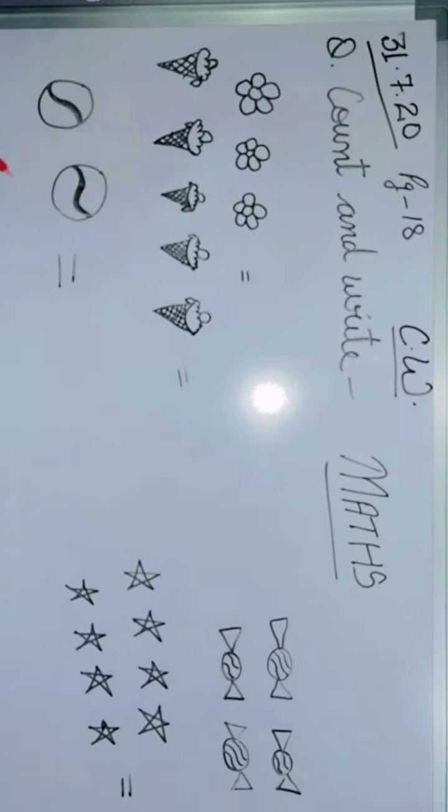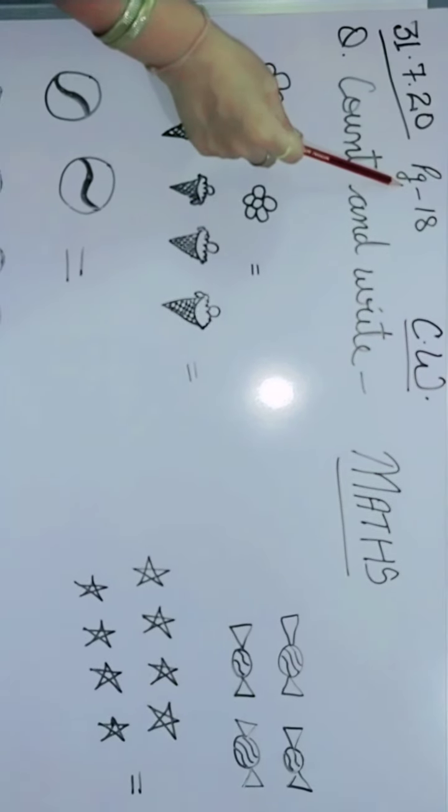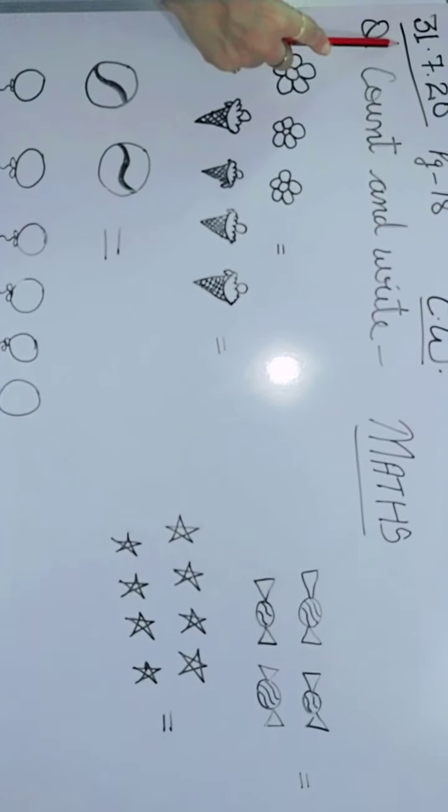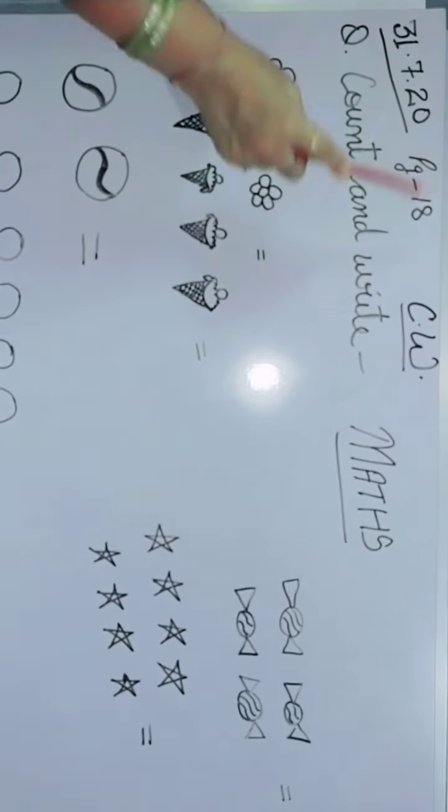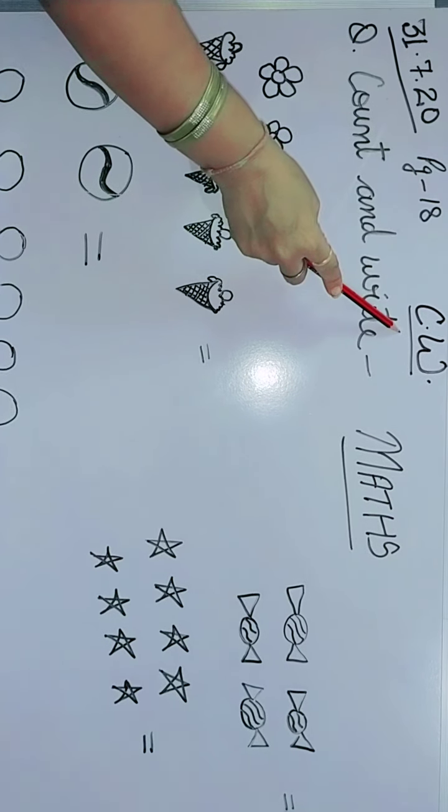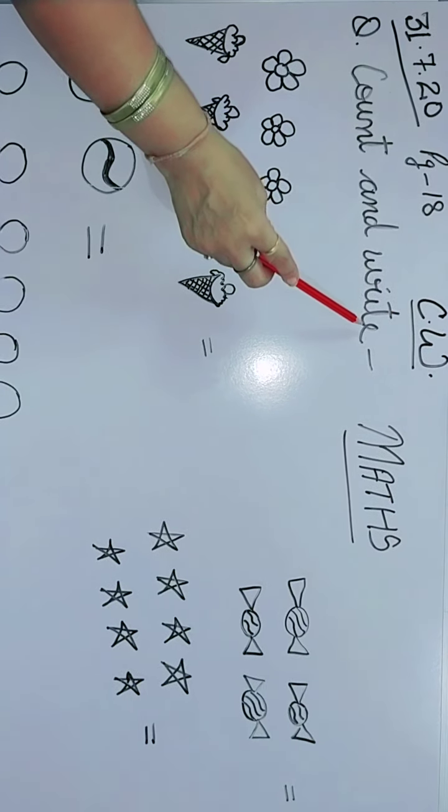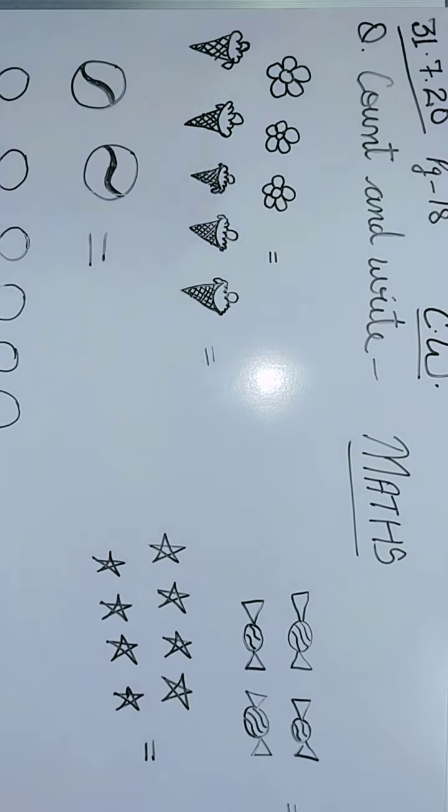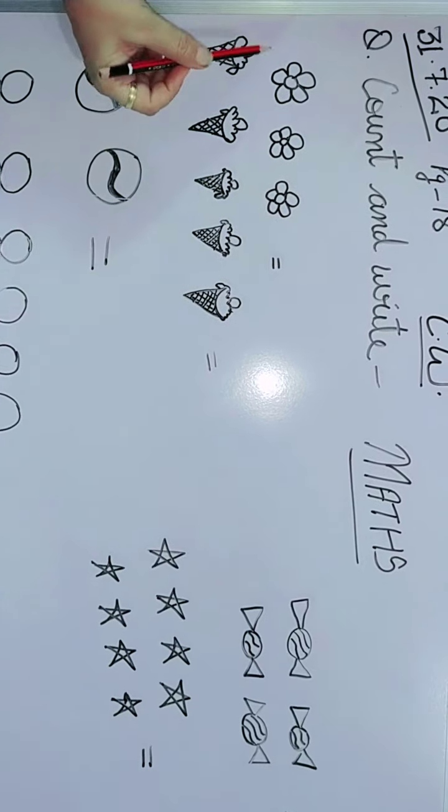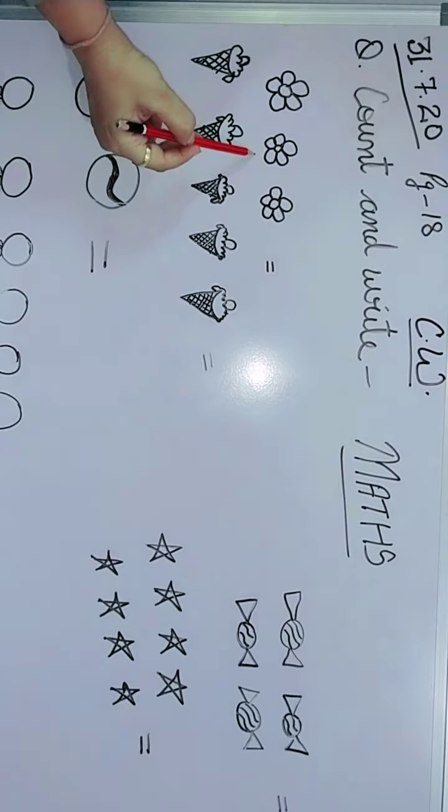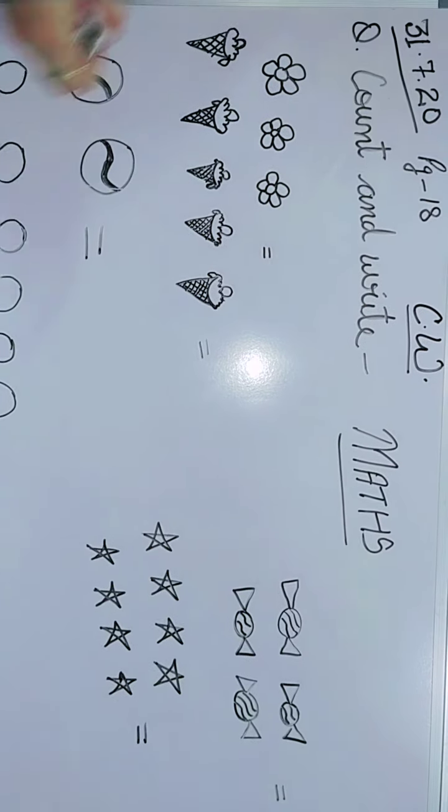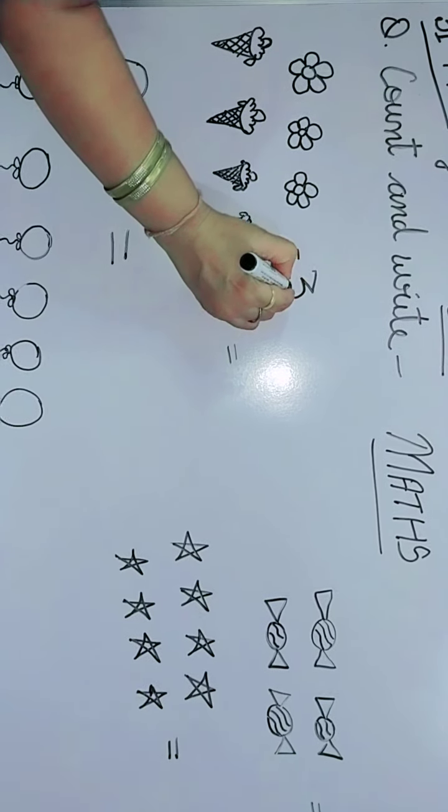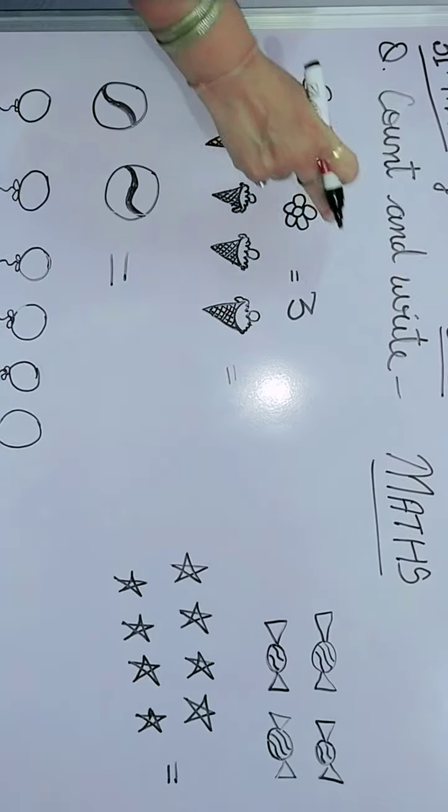Now you open your books to page number 18, maths book to page number 18. Write the date, 31 CW on top. The question is count and write. How you will count and how you will write the number. Now see there are flowers. So count the flowers, 1, 2, 3. How many flowers are there? 1, 2, 3. So we will write the answer 3. So this way you have to count and write.